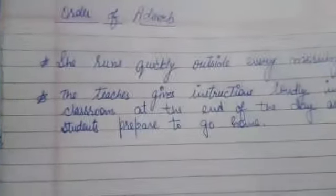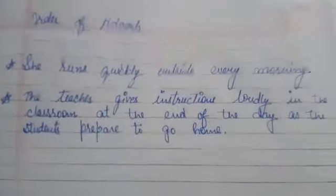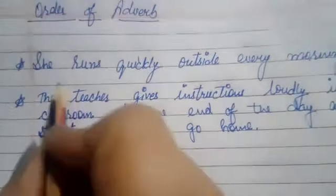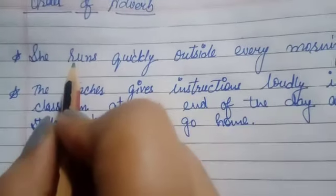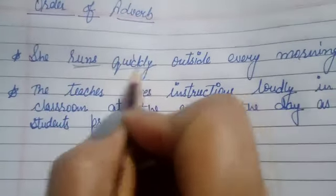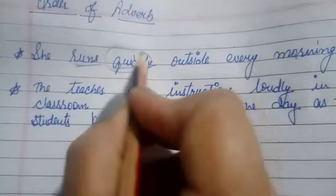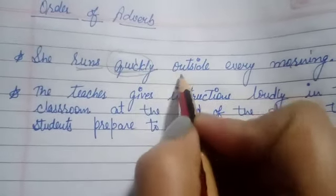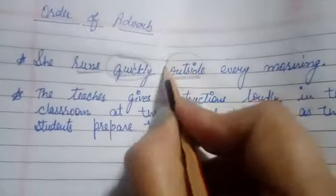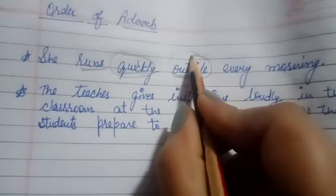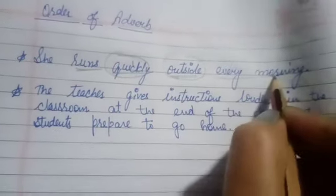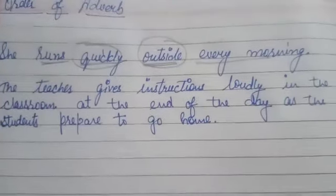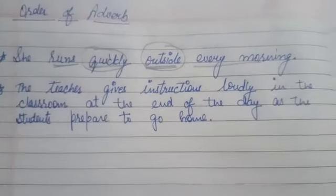I am going to give you two examples. First: 'She runs quickly outside every morning.' 'Runs' is the verb. How does she run? Quickly — adverb of manner. Where does she run? Outside — adverb of place. When? Every morning — har subha — adverb of time.